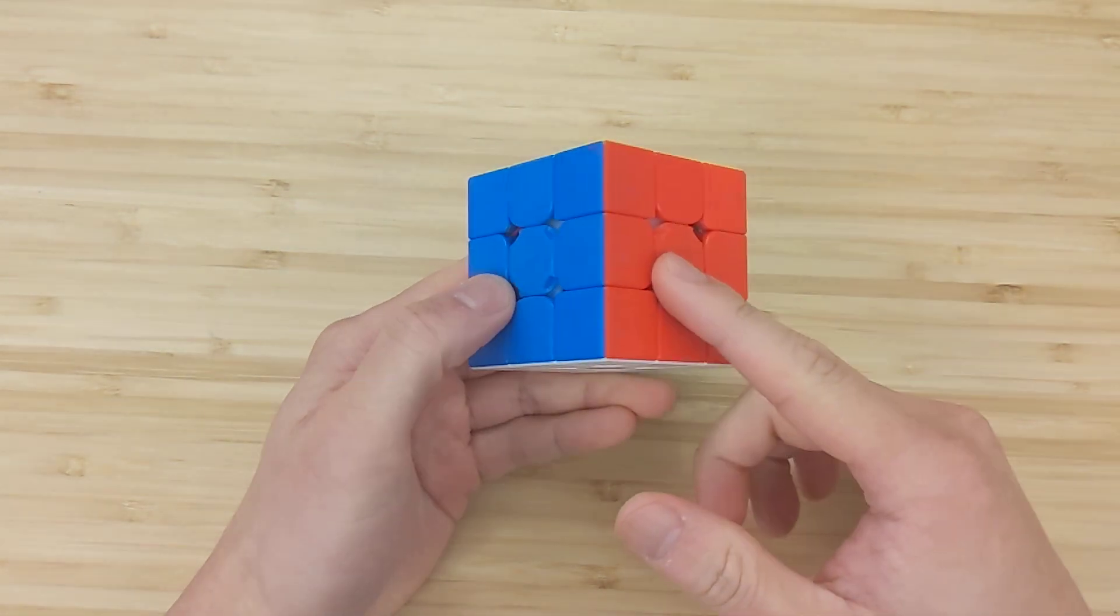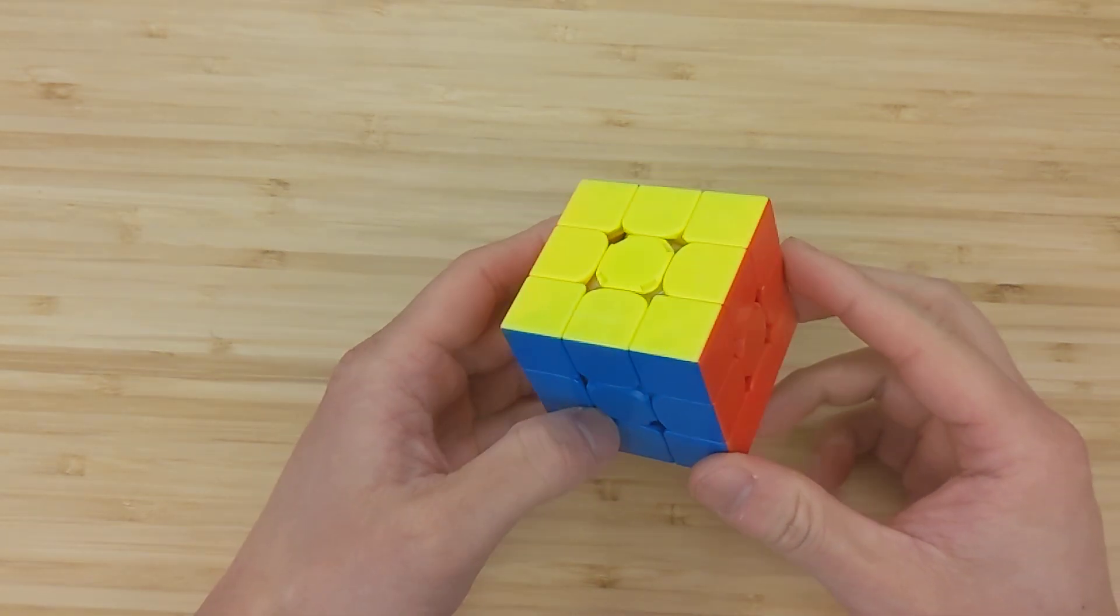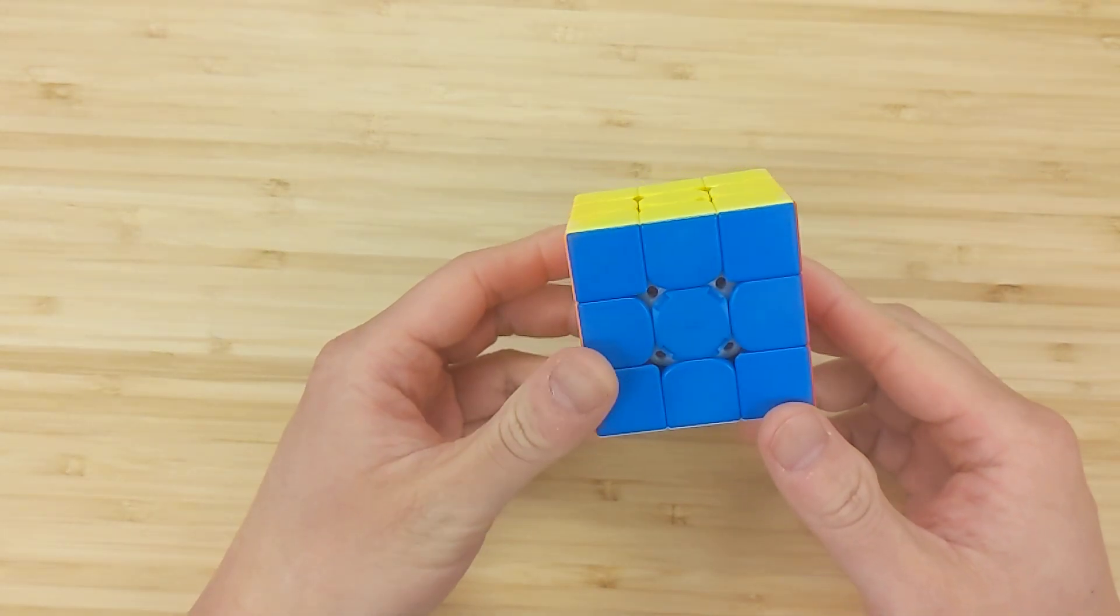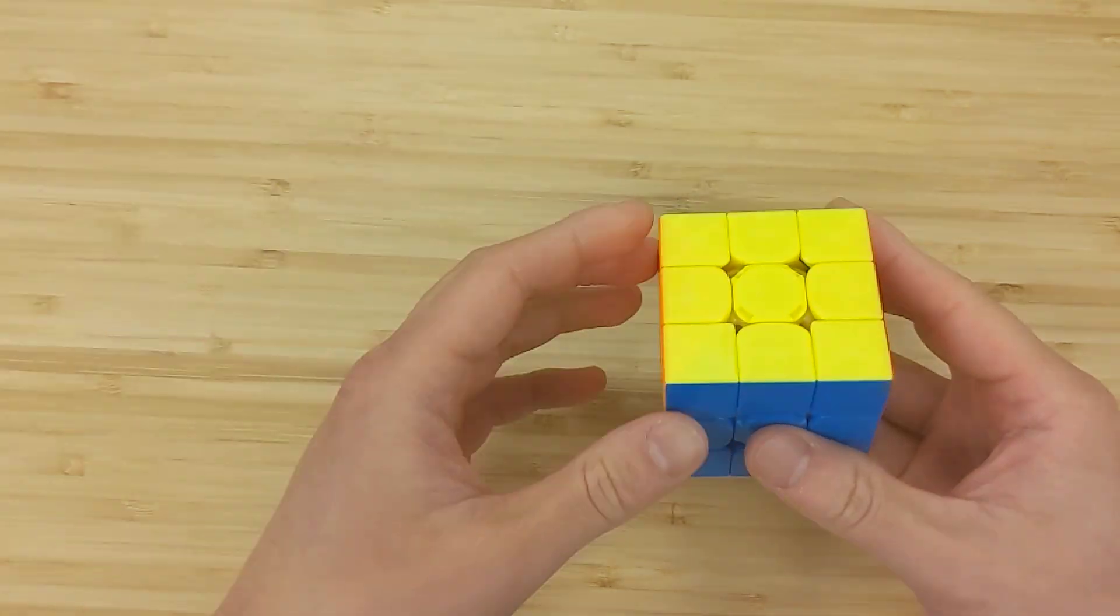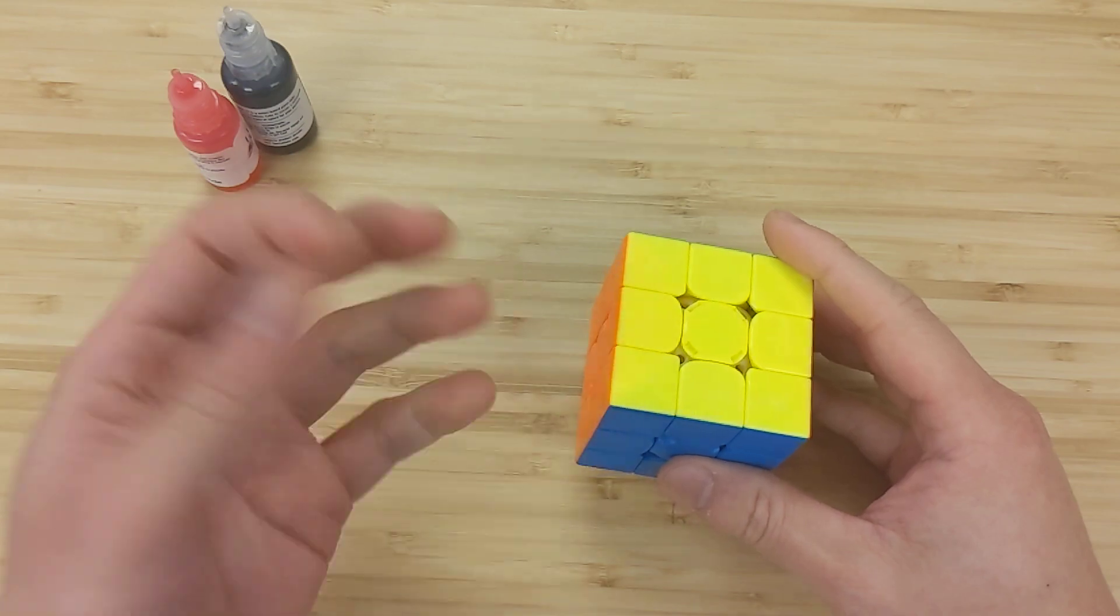Smart cubes have electronic components inside of them, so it's best not to lube them too much. You run the risk of damaging the components if you put in too much at once. So the strategy here will be to put in little by little and break it in.